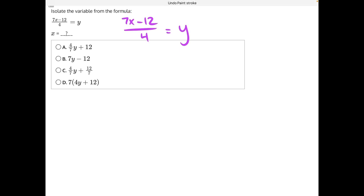7x is being divided by 4, so the opposite operation there is multiplying both sides by 4. These 4s will cancel, leaving us with 7x minus 12 is equal to 4y.